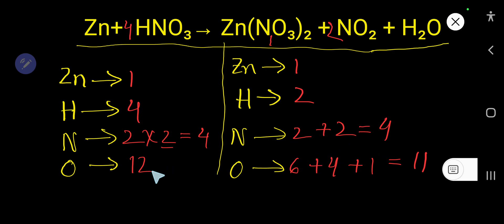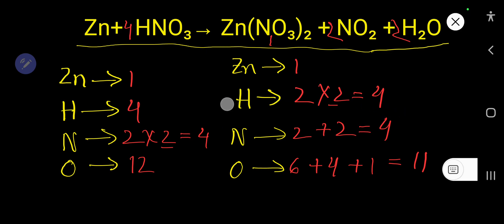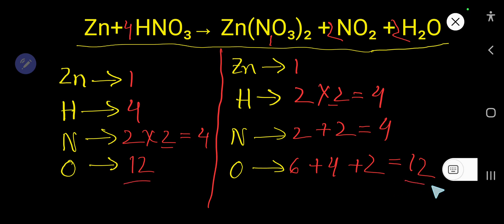Now nitrogen is 4 on both sides and is balanced, but hydrogen is 4 on the right and 2 on the left. Simply multiply H₂O by 2, placing coefficient 2 before water, giving 4 hydrogen. Counting all oxygen: 6 plus 4 plus 2 equals 12. Final check — 12 oxygen, 4 nitrogen, 4 hydrogen, 1 zinc on each side — everything is balanced. This is the balanced chemical equation.